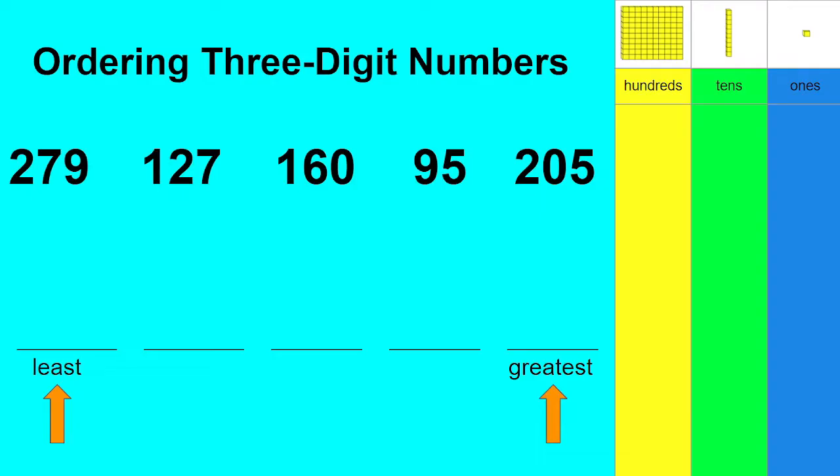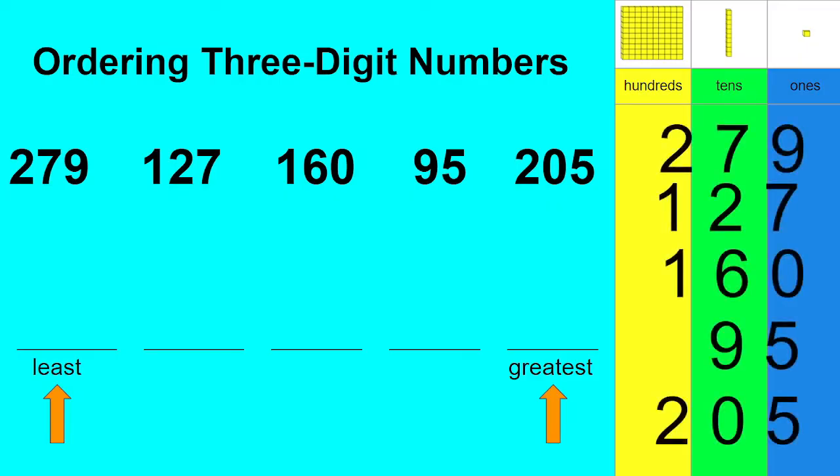So we need to find the least or the smallest of these numbers. If we put them here in our graph in a column, I think that's going to help us find our smallest number.